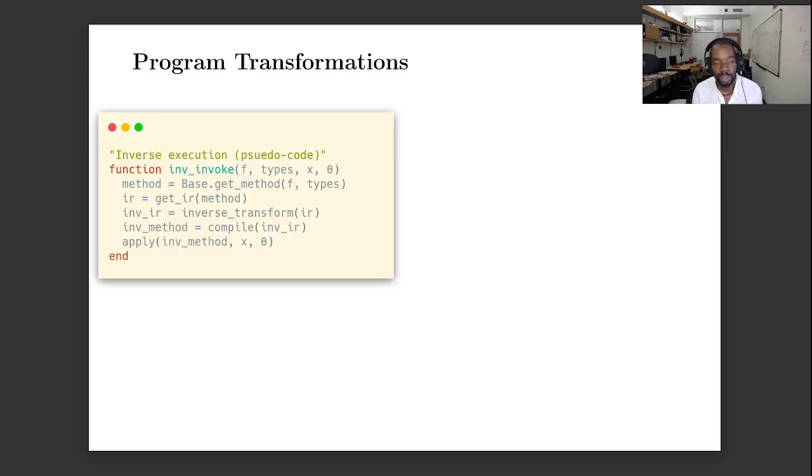Okay, so let me go back to the thing I showed you at the start, this inverse invoke method. So the inputs are f, some types to find the method, and then some input x and parameter theta. So the first thing we do is find the method and then we find the IR, the internal representation of that method. We then apply that transformation that I just told you about to this IR, compile it, and then apply this compiled inverse method to the inverse inputs and the parameters.